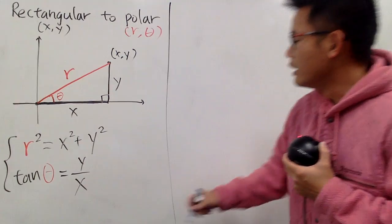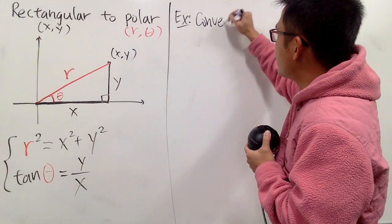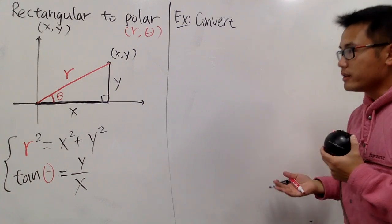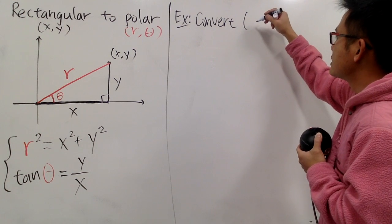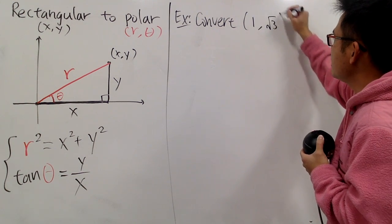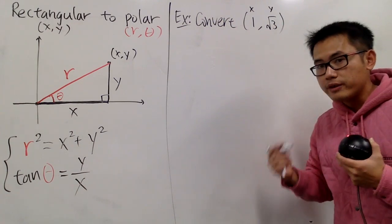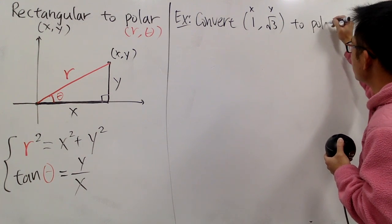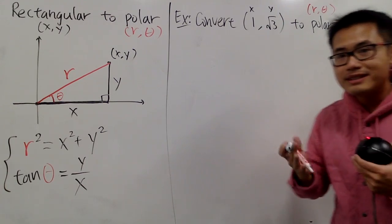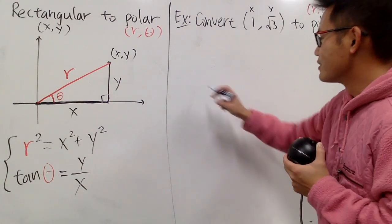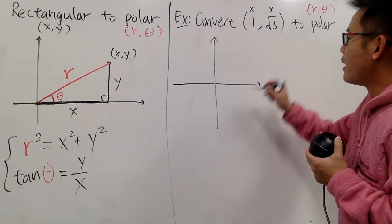Let me demonstrate with an example. We are going to convert a point in rectangular coordinate form to polar coordinate form. Let's say we have the point (1, √3) — this is x and y, the rectangular coordinate. I want to change this to polar now. Our goal is to figure out r and theta. The recommendation is: always try to draw a picture. So the point has x = 1 and y = √3, which is positive, so we go up.